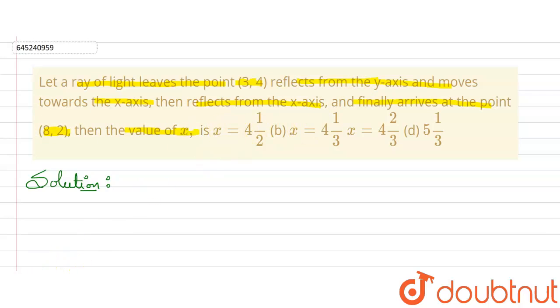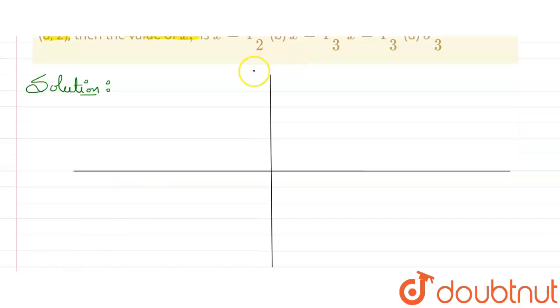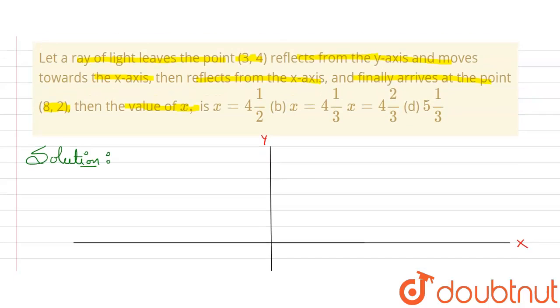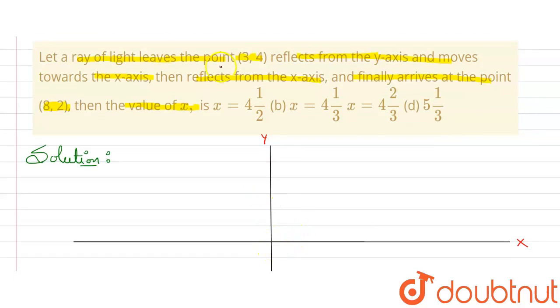So let's draw a graph here. Consider this is our graph - this is y-axis and this will be x-axis here. This will be origin. A ray of light leaves from point (3,4), so suppose here I am having a point first that is (3,4). It reflects from y-axis, so it will go to y-axis.